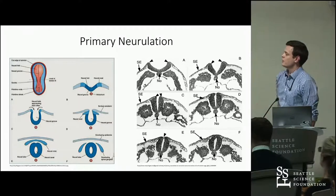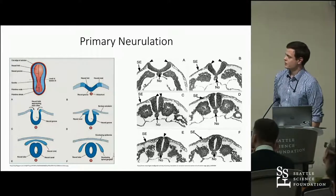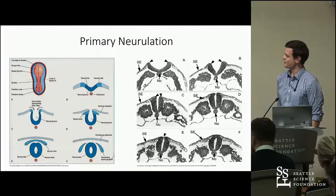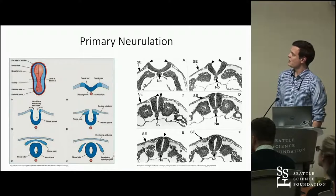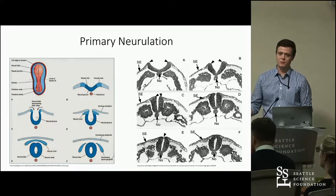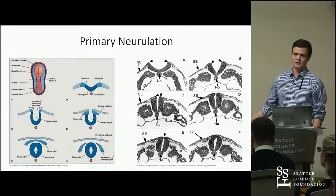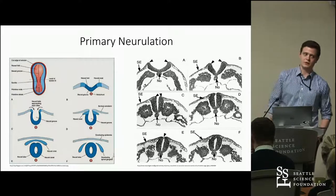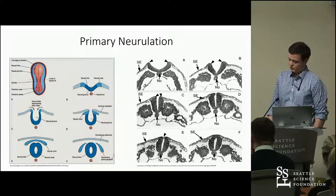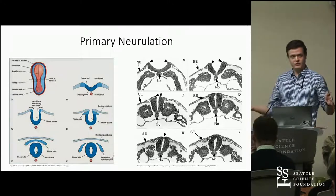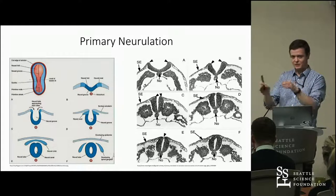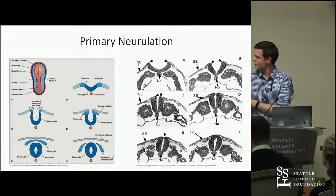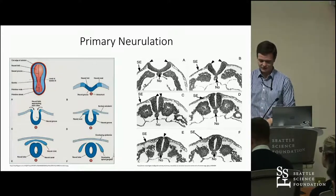These two diagrams demonstrate primary and secondary neurulation side by side. Primary neurulation is responsible for forming the majority of the neural tube, spanning from the brain down to about the thoracic level. It is formed by the folding of the neural plate — a longitudinal folding in which the neural groove and neural folds come together and fuse at the midline, as you can see with the midline fusion shown.